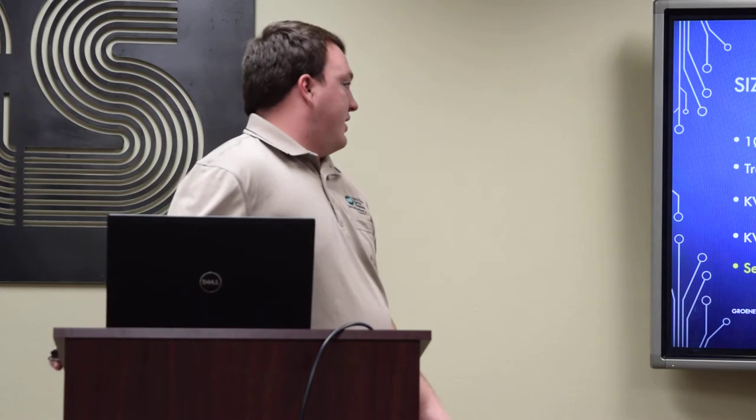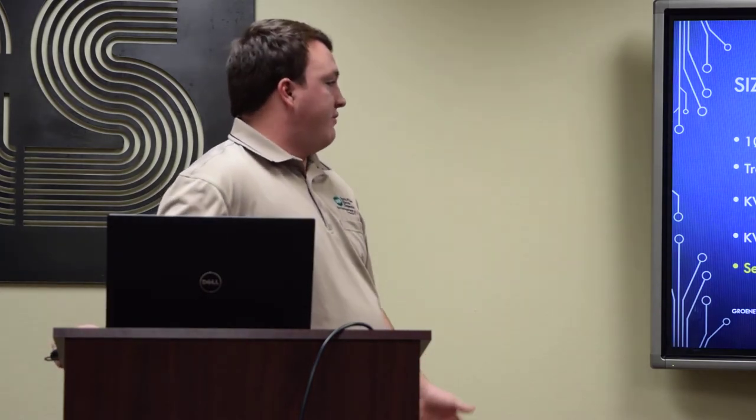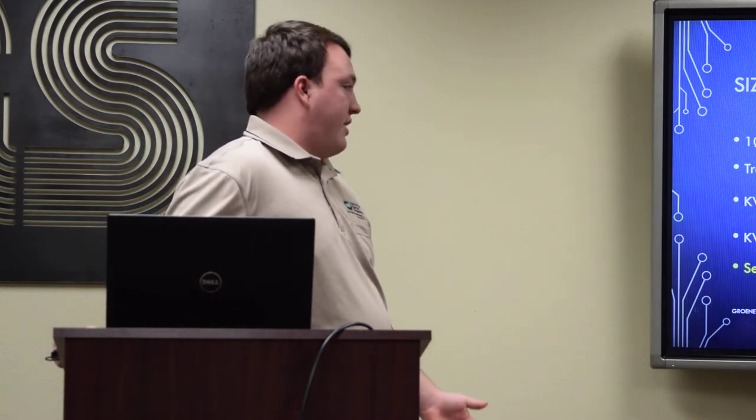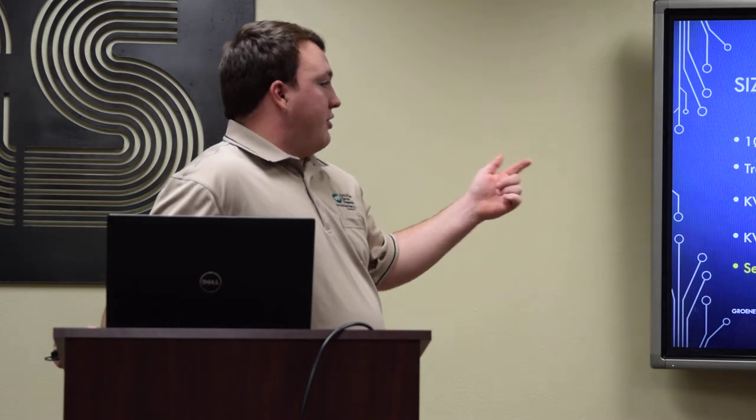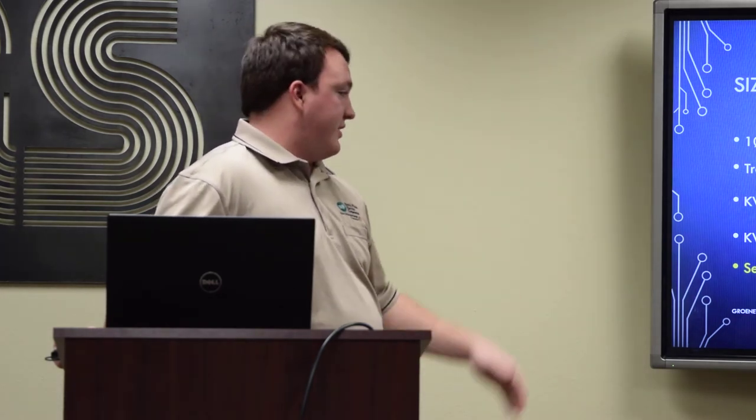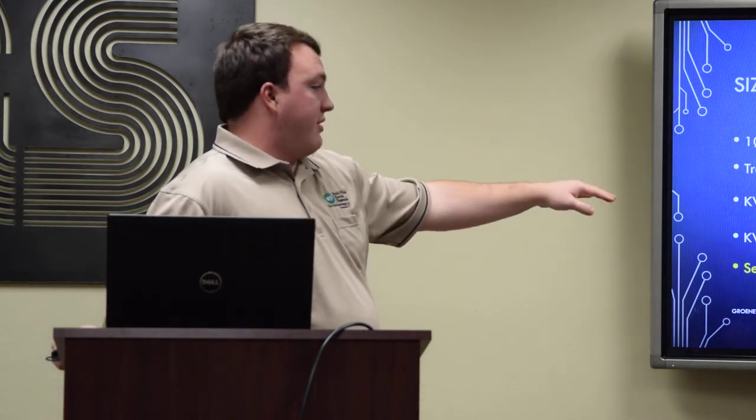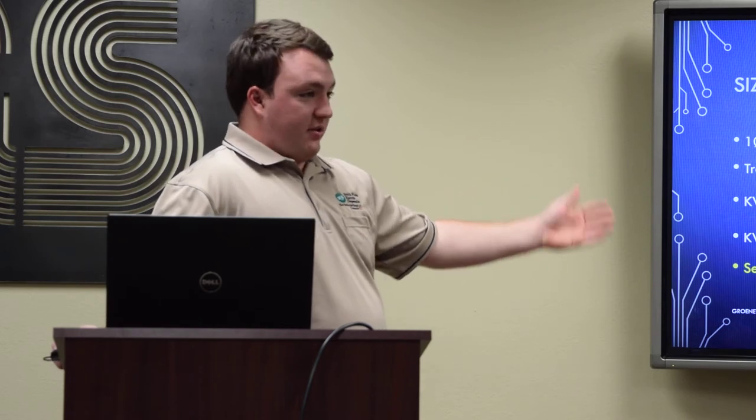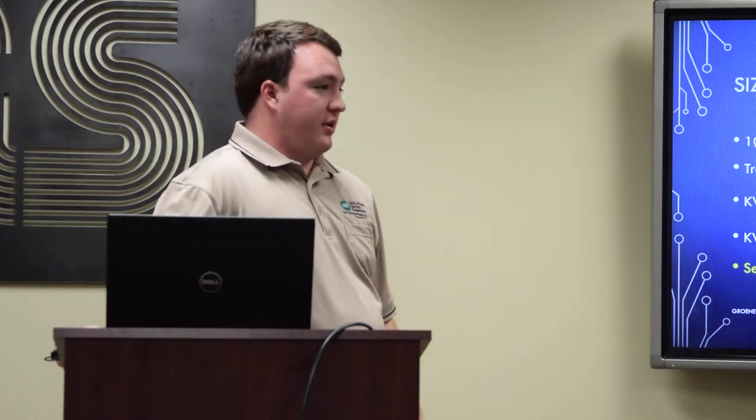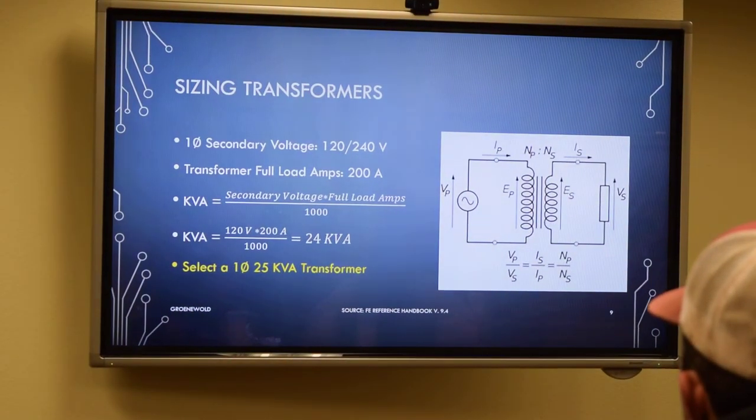An example on sizing your transformers, if you have a single phase secondary voltage of 120/240, and a member says, hey, I want a 200 amp service, you would just multiply the 120 times your 200 amp service and divide by 1,000 to get your kVA rating for your transformer, which would come out to 24 kVA. We don't have any of those, but we do have a 25 kVA transformer. That's why a 200 amp service is why we hang a 25 kVA pot.